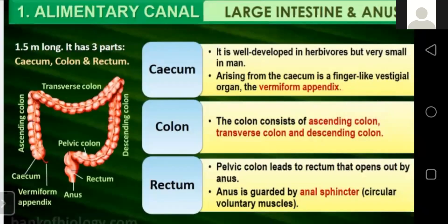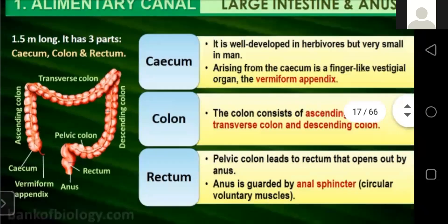The large intestine has three parts: cecum, colon, and rectum. It is about 1.5 meters long. It is well developed in herbivores but small in humans. Arising from the cecum is a finger-like vestigial organ called the vermiform appendix, which was originally for the digestion of cellulose. Since humans do not digest cellulose, this organ is rudimentary and vestigial.